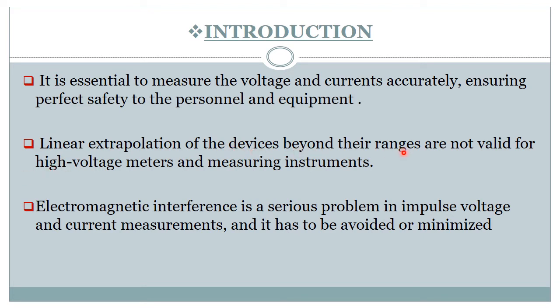There are a lot of methods to measure high current and high voltages. There are different types of sensors, different types of arrangements, like sphere gaps, CT, and PT. The linear extrapolation of devices beyond their ranges is not valid for high voltage meters and measuring instruments. Electromagnetic interference is a serious problem in impulse voltage and current measurements, and it has to be avoided or minimized.